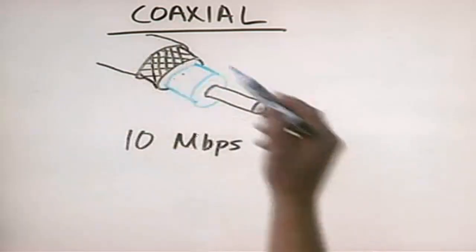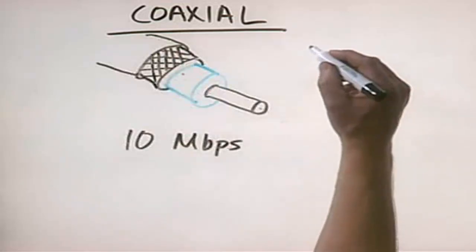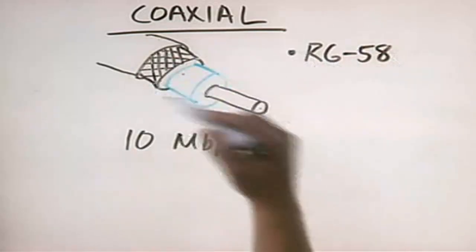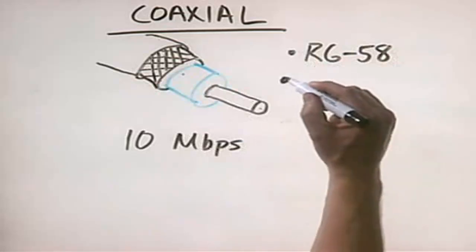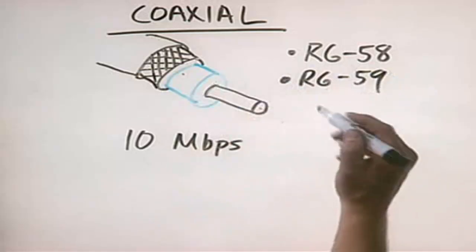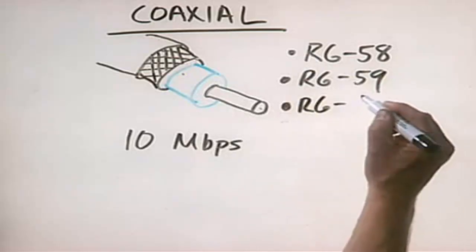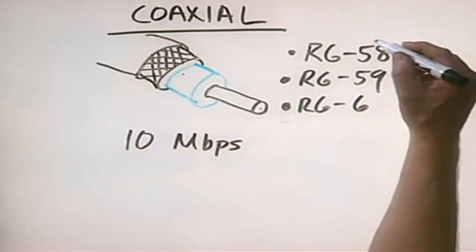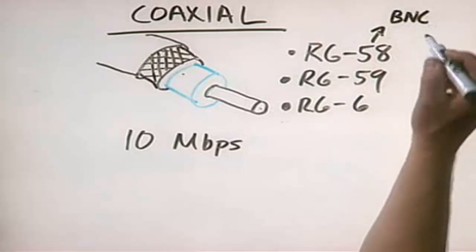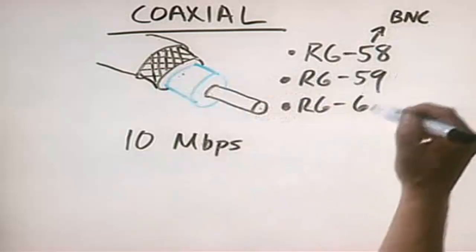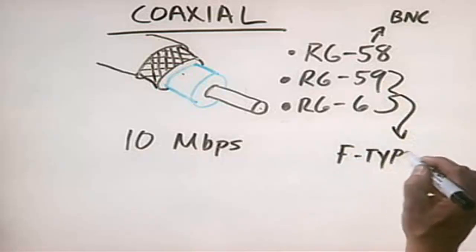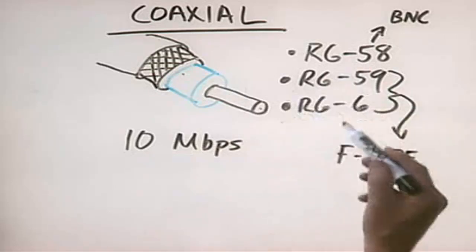There are three different types of coaxial cable you'll probably be working with as a hardware tech. The first is RG58, used for computer networking. RG59 is the type used for cable TV, and RG6 is used for satellite TV. RG58 uses what's called a BNC connector to connect a network interface card to the coaxial cable, while RG59 and RG6 use an F-type connector to connect to the back of a television set or receiver.